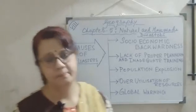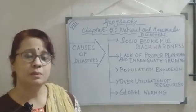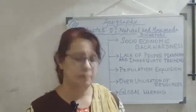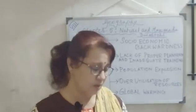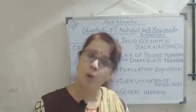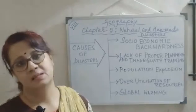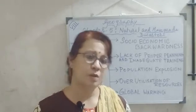The third point is population explosion, a major problem nowadays. Due to overpopulation, the demand for land increases, which leads to depletion of land, illegal building construction, and inefficient drainage systems. These are all harmful to nature and cause devastating disasters. As we harm nature, nature takes its revenge.